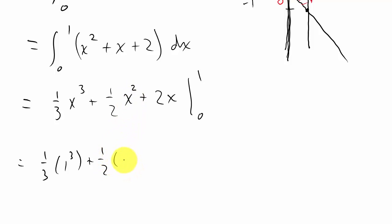So that's going to be 1 half times 1 squared plus 2 times 1, minus - and when I plug 0 in for x, that's just going to be 0. But I'll go ahead and plug it in so you can see it: 1 third times 0 cubed plus 1 half times 0 squared plus 2 times 0.